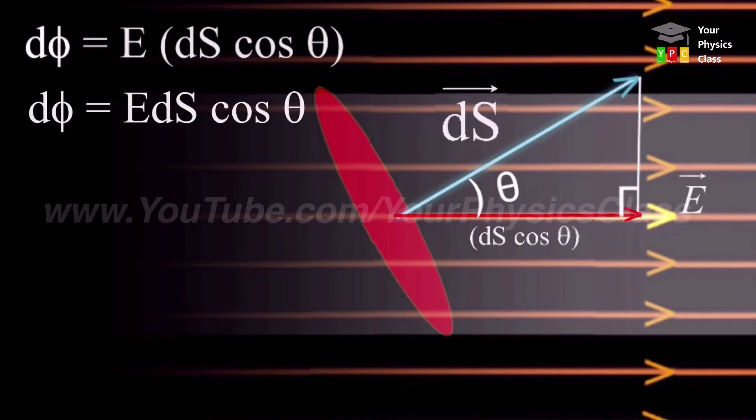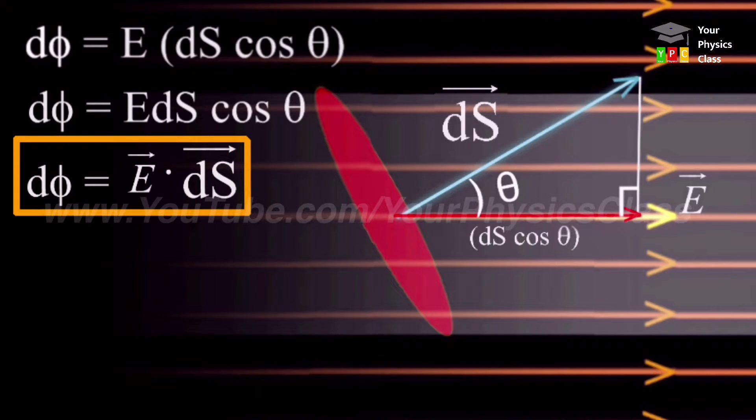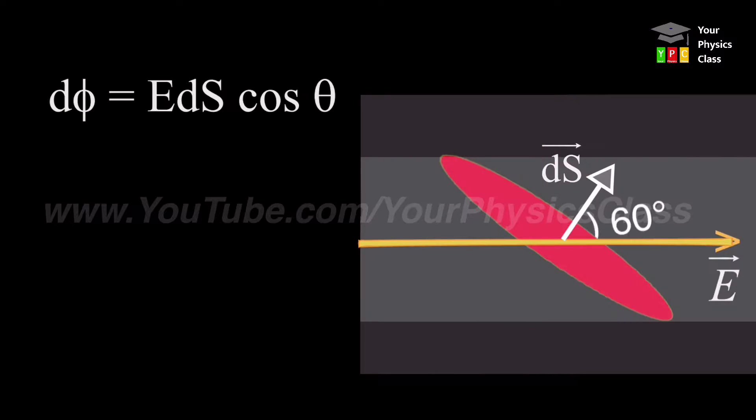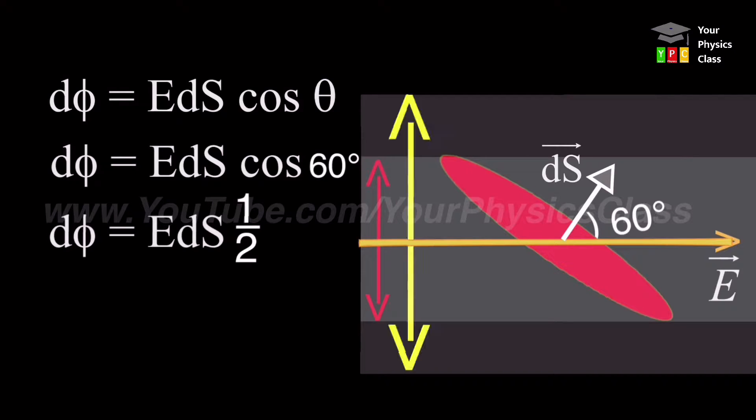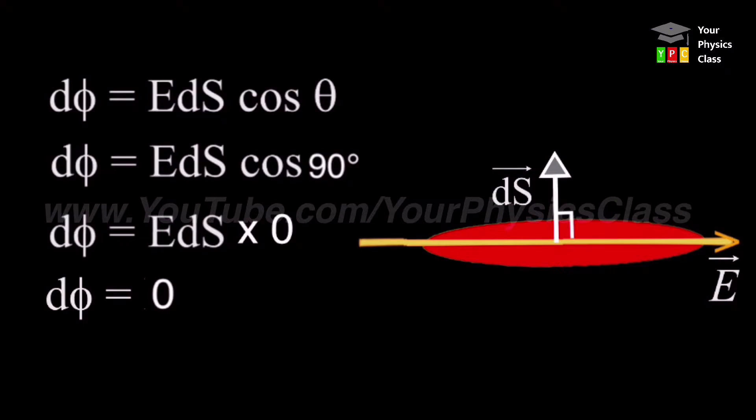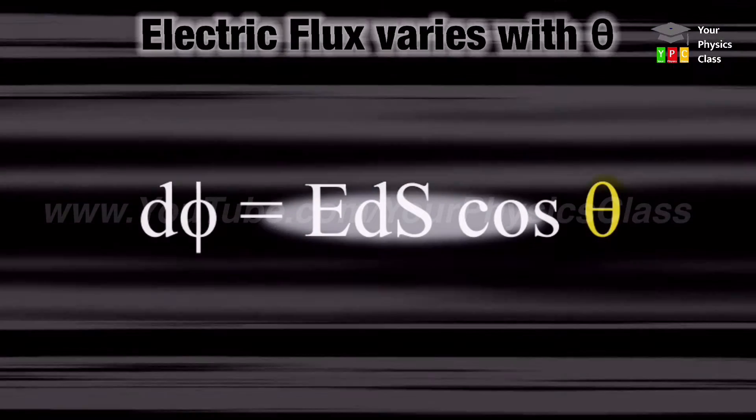So d-phi we write as vector E dot vector dS. The flux is the dot product of electric field intensity and area vector dS. If I make this angle 60 degrees, the flux through this area would be half of its maximum value. And if it is made 90 degrees, then naturally flux through this area would be zero. Clear? So in this way the flux may vary as angle between area vector and electric field intensity varies.